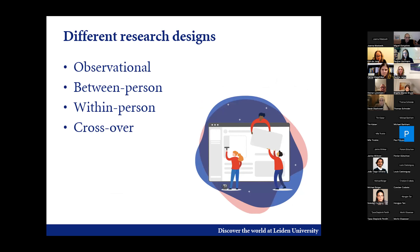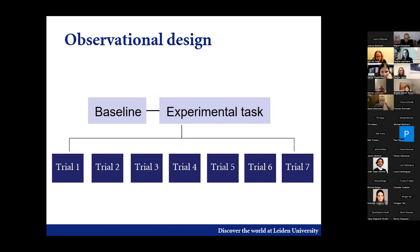There are also different research designs. I want to specifically say something about between-person, within-person, and crossover designs. An observational design is relatively straightforward — you have a baseline, an experimental task, different trials, and you just measure. Observational design does not mean you're just observing; you only have one condition, so it's more of an exploratory design where you look at what happens when people take this task.